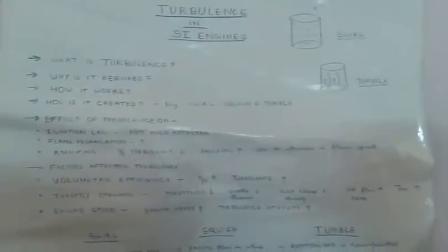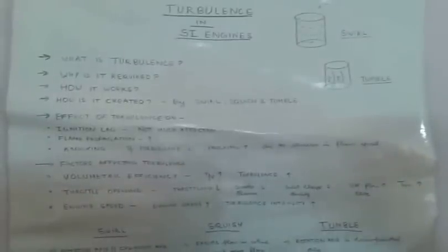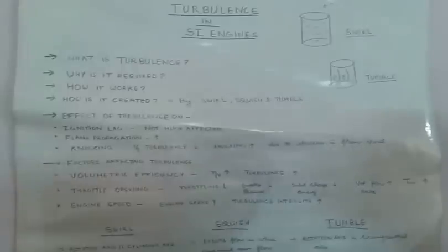In SI engines, turbulence plays an important role in the factors affecting the combustion chamber. Why is it required? High turbulence near TDC when ignition occurs is very desirable for combustion. It breaks up and spreads the flame front many times faster, due to which the air-fuel mixture is consumed within a short time and self-ignition and knock are prevented.